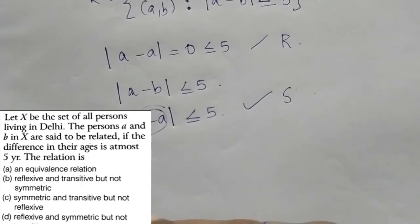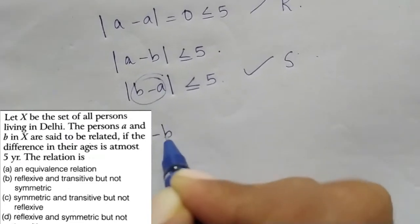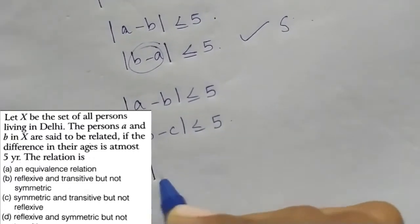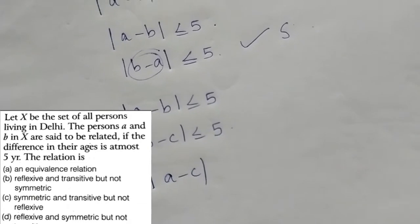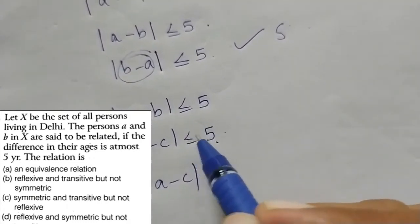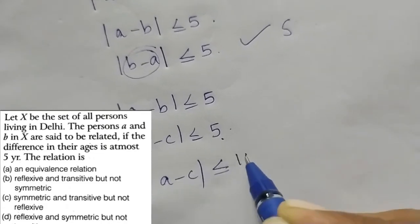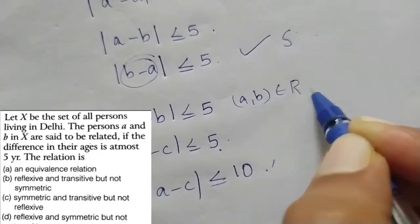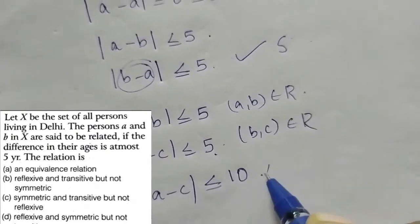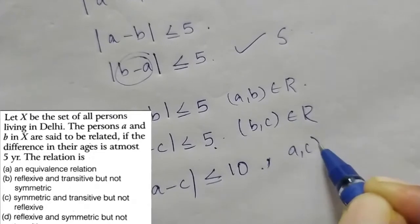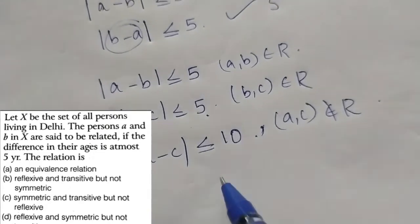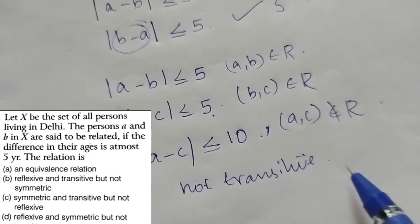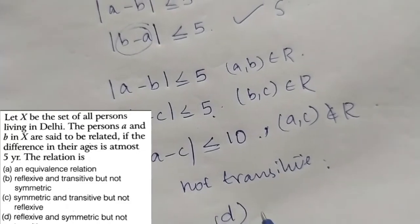For transitivity: if |a − b| ≤ 5 and |b − c| ≤ 5, adding them gives |a − c| ≤ 10. So (a, b) belongs to R and (b, c) belongs to R, but (a, c) does not necessarily belong to R. It does not satisfy transitivity — not transitive. Option D: reflexive and symmetric but not transitive. That is the right answer.